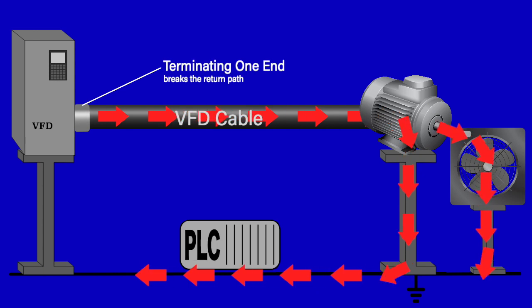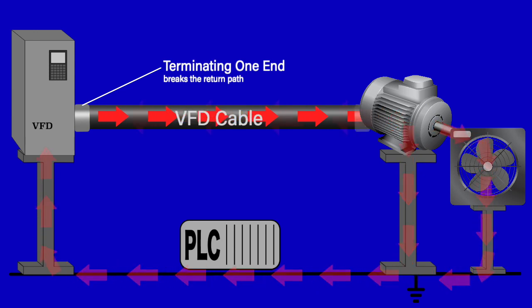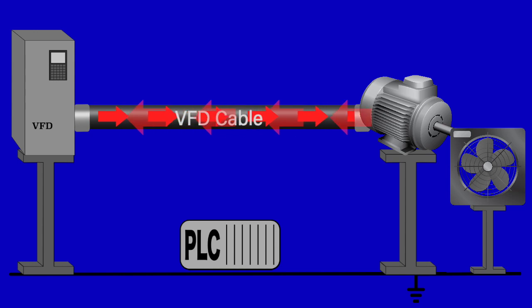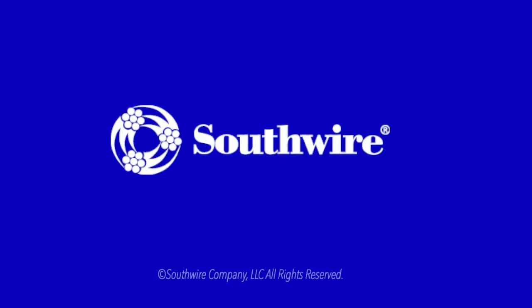The path also breaks if low impedance at high frequency terminations are not installed. Installing properly terminated VFD cable can control common mode current and minimize the chance of device or motor failure.